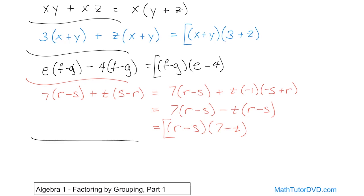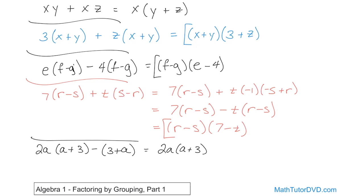This next one looks similar but is actually easier. What if we have 2a times the quantity a plus 3, minus the quantity 3 plus a? I look and say: I have 2a here, and just a 1 there. I have a plus 3 and then 3 plus a. Well, 3 plus a is exactly the same thing as a plus 3 — if I flip the order of addition, 3 plus a is the same as a plus 3. When you have 2 plus 5 it's the same as 5 plus 2, so I can flip the order of addition at will without factoring anything.